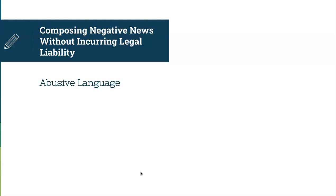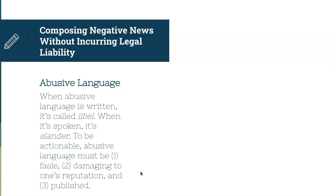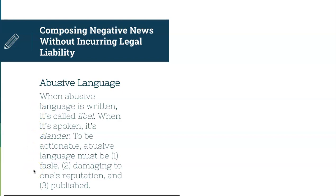The first thing to think about regarding legal liability is abusive language — things like calling someone a name or accusing them of something. When abusive language is written it's called libel, and when it's spoken it's slander. To be actionable, abusive language must be false, damaging to one's reputation, and published. So if there's some sort of negative news, be really careful to keep any name calling or accusations out of it.